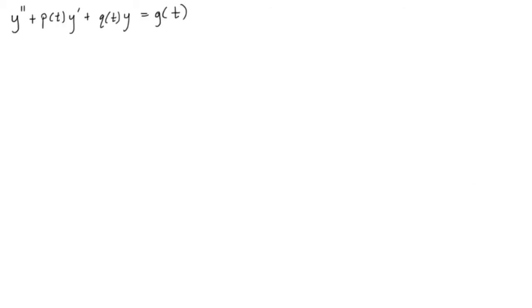So first of all, what we need to do is make some generalizations. If g(t) here is equal to 0, then we can call this a homogeneous differential equation. So let's just erase that. If we write g(t) as 0, now we have homogeneous.